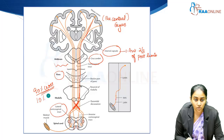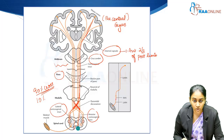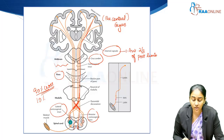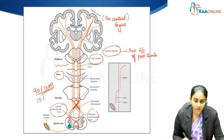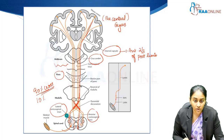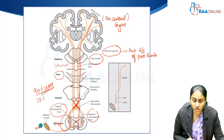10% of the fibers do not cross and they form the uncrossed anterior corticospinal tract. The fibers in the corticospinal tract are responsible for the motor output of the body. Through the spinal cord they travel, and you have the dorsal root and the ventral root. The ventral root is the motor root, and the dorsal root and the motor root join together to form the nerve. The motor fibers travel through the motor root into the peripheral nerve, and through the peripheral nerve it finally reaches the neuromuscular junction and finally the muscle.